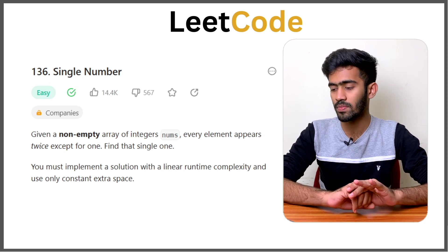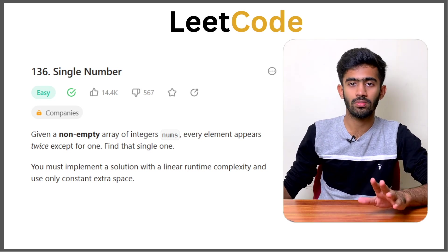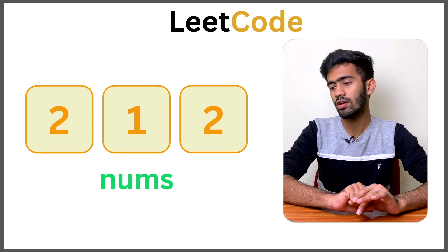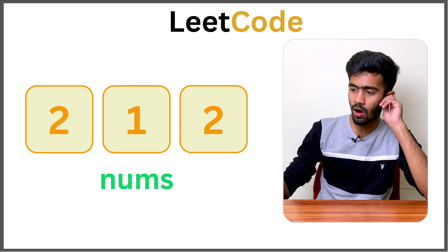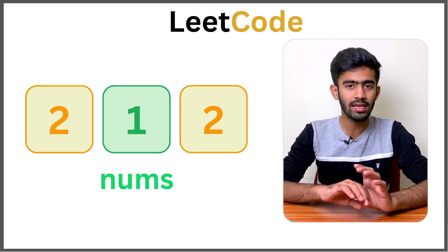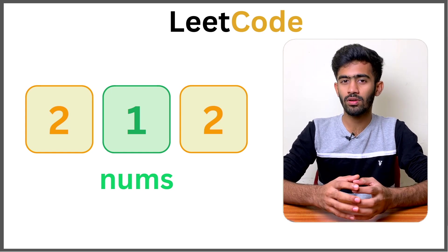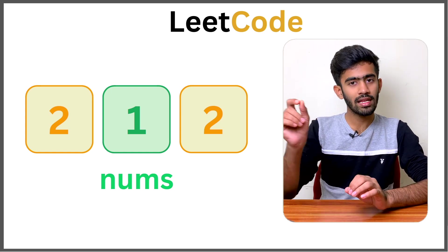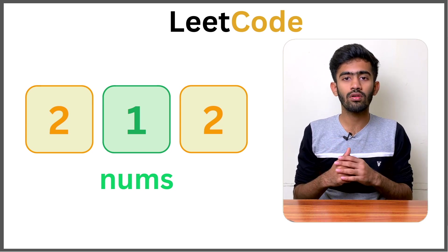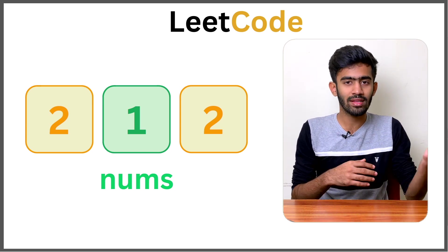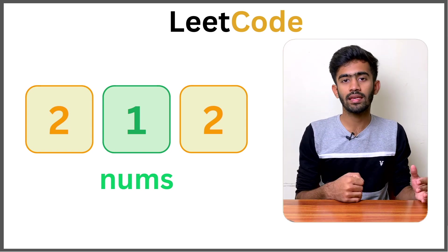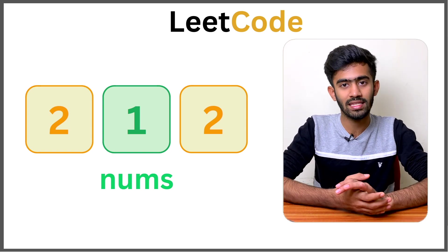We cannot use extra space like a hash map or an array declaration — that would be O(n) in the worst case. So we cannot use extra space. Let's use one example: 2, 1, 2. If we use a hash map, one does on each one — we have an array, one number is stored, and we traverse the array. If the count is one, that number is our answer. We can solve it that way but it uses extra space, so we need a different logic.